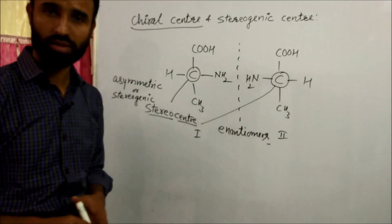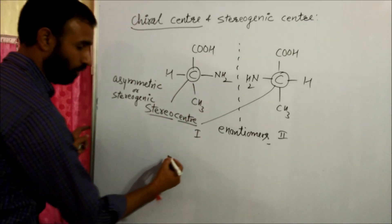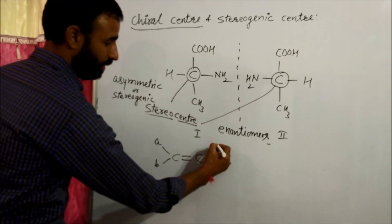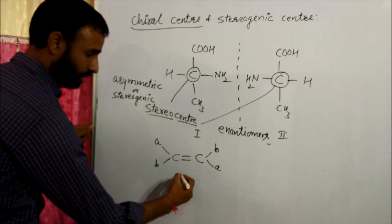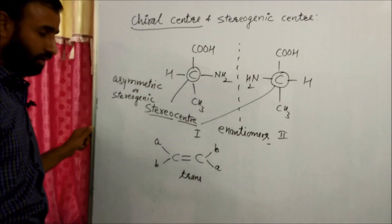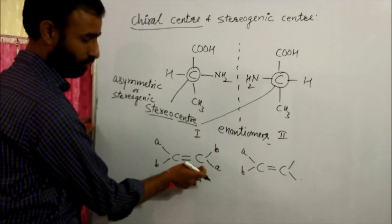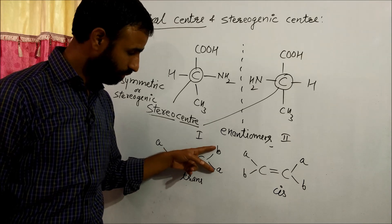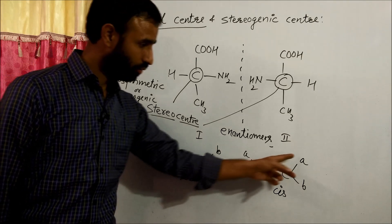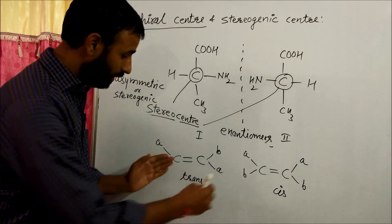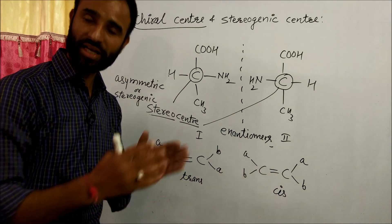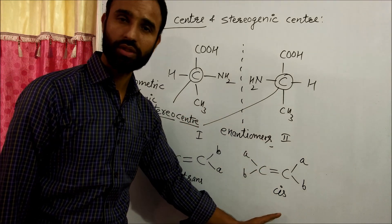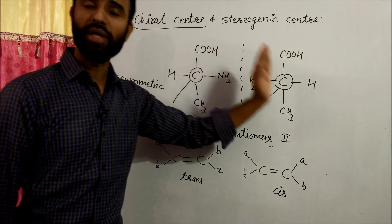Now let us discuss one more example. There is a double bond: a-b and b-a — this is the trans isomer. Now we interchange the atoms at one of the carbons — it becomes a-b, that is cis. When we interchange these atoms at this carbon from b-a to a-b, we get another stereoisomer. But cis and trans are not enantiomers — there is no mirror image relation between them.